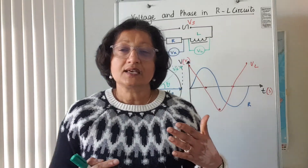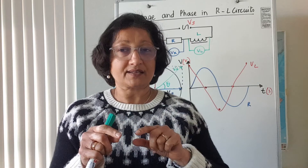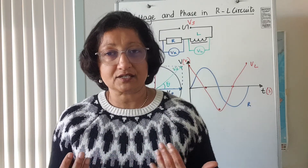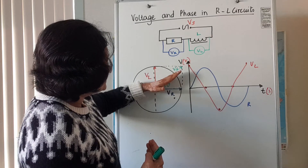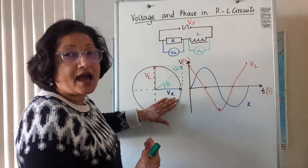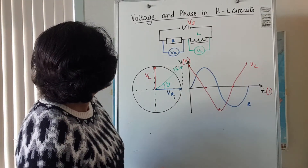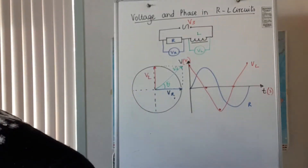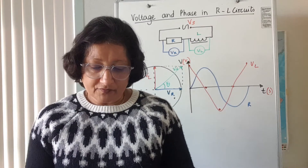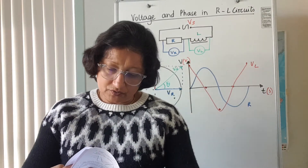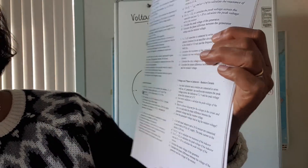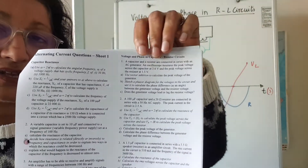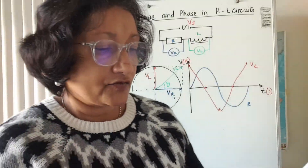Because the resistor voltage is not affected by frequency, when the voltage across the resistor is a maximum, the current through the resistor is also a maximum — so the current is always in phase with the resistor voltage. This means the supply voltage actually leads the current when you have an inductor and a resistor in an AC circuit. There are practice questions on page 13 in your booklets under 'Voltage and Phase in Inductor-Resistor Circuits', very similar to the capacitor-resistor circuit. Give those a try — bye for now.